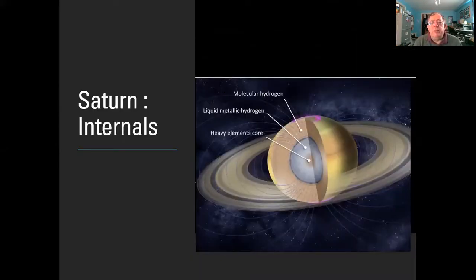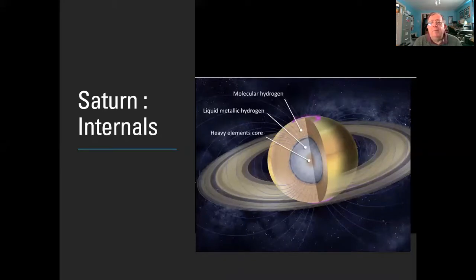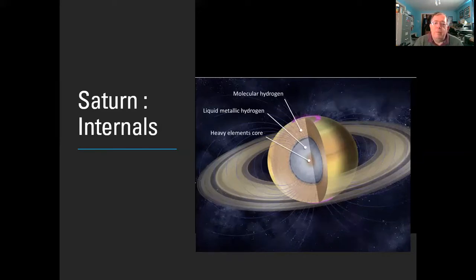Rather like Jupiter, we think Saturn has a fairly solid core deep inside with an inner temperature of around 25,000 degrees. Overlaying that is a high-pressure, high-temperature zone compressing the hydrogen into liquid metal — the atoms are so closely crushed together that electron orbits overlap, allowing electrons to flow freely, making it electrically conducting. In the outer layers where pressure and temperature are lower, you have ordinary hydrogen gas mixed with helium and organic compounds like ammonia, methane, and ethane. Saturn also has a strong magnetic field as a consequence of the churning liquid metal hydrogen core.